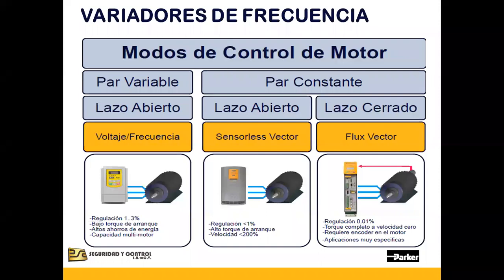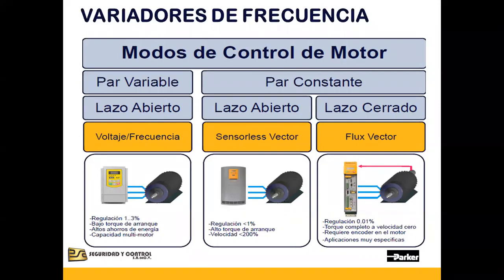El modo Volt-Hertz maneja una regulación o eficiencia entre el 1 y el 3% de la frecuencia que administra al motor. Maneja un bajo torque de arranque y tiene un alto consumo de energía. Tiene la capacidad particular de manejar multimotor, es decir, que bajo un solo variador se puede manejar una gran cantidad de motores. Se puede manejar una sola señal de control y el voltaje del motor varía en relación proporcional con la frecuencia de la curva.